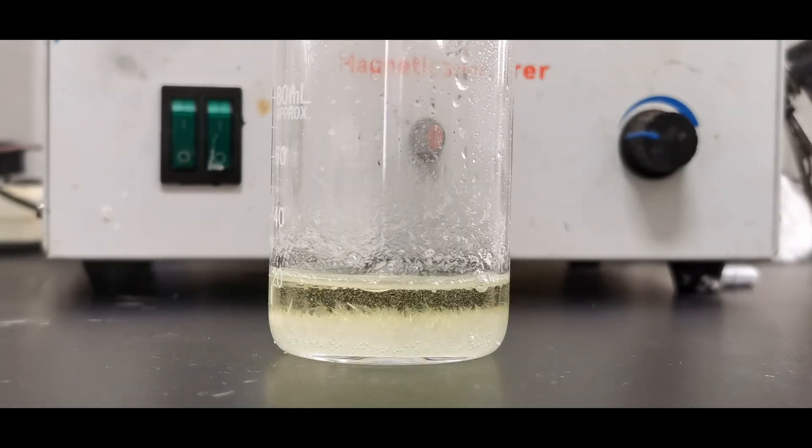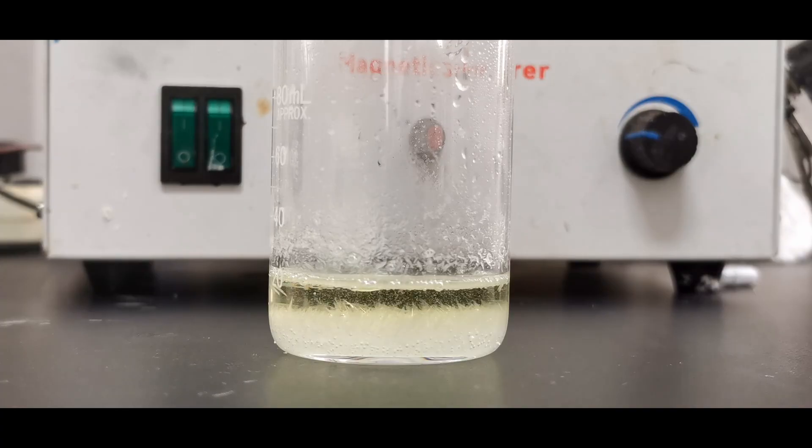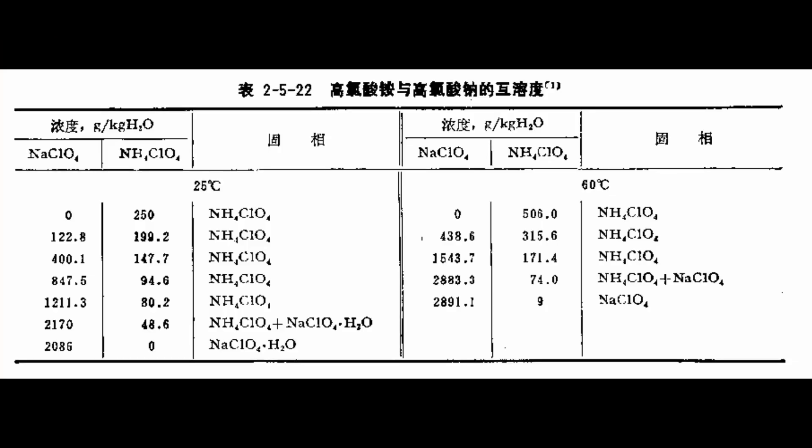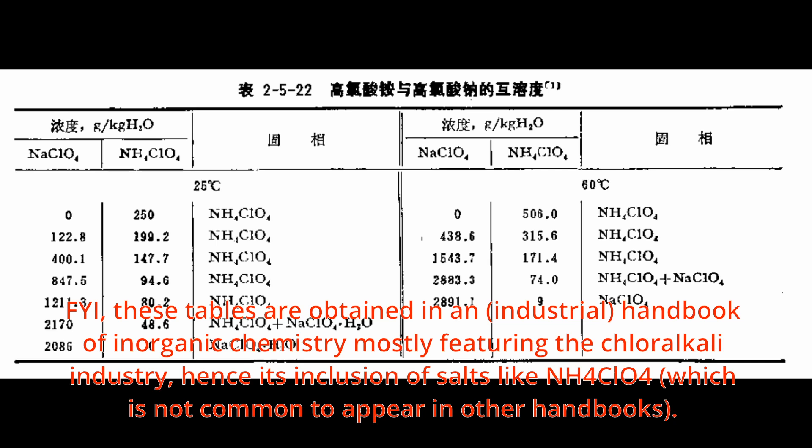If we remove the sodium chloride and cool down the remaining solution, ammonium perchlorate would precipitate due to its decreased solubility, while sodium chloride still stays in solution. Of course, ammonium chloride and sodium perchlorate also have a steep solubility curve, so they might crystallize as well and end up as an impurity.